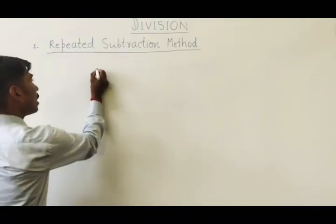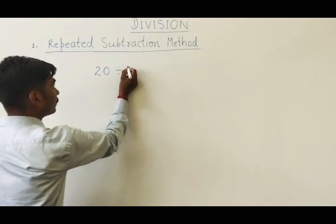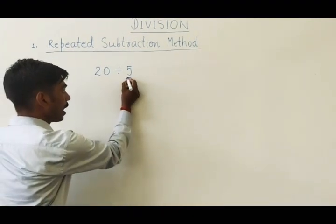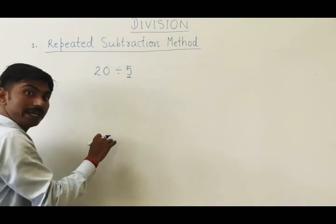Suppose we have to divide a number 20 by 5. So what we are doing is the number by which we have to divide, we have to subtract repeatedly until we get zero.